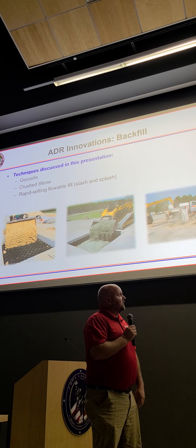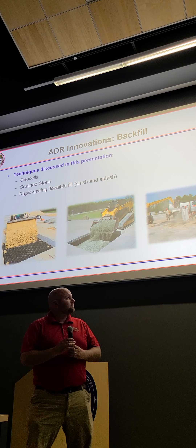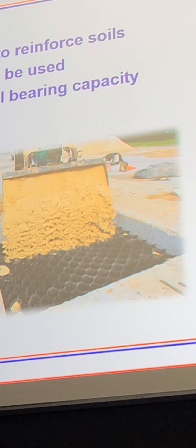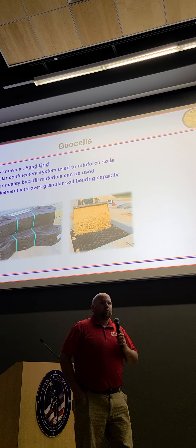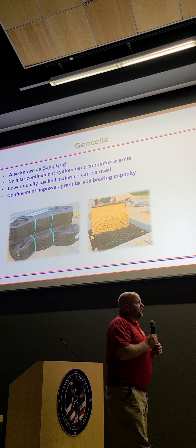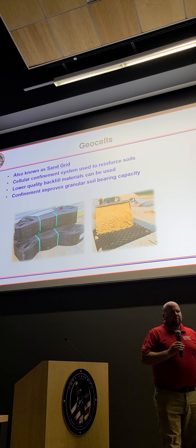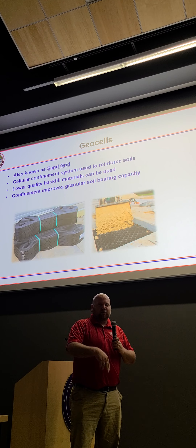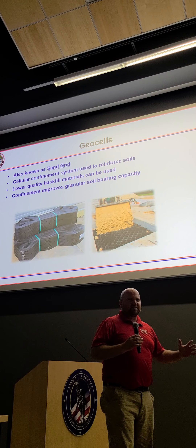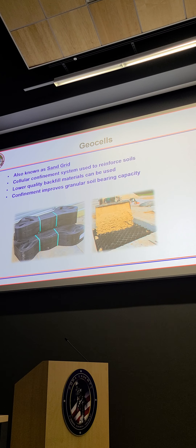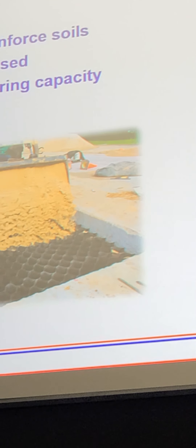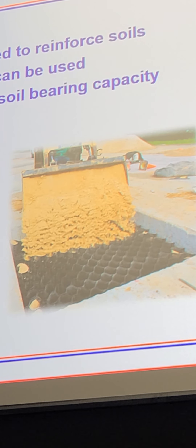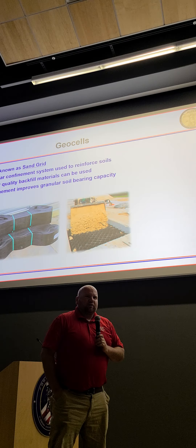In this brief we'll start out by talking through geocells. Geocells, also known as sand grid, are a cellular confinement system used to reinforce soils. Basically it allows you to take a low-quality backfill and make it a little bit better. That confinement improves the bearing capacity of the granular soil — kind of like when you put an umbrella in sand at the beach. The further down you go, the more stable it is because of the confinement. That's what gives sand grid its improved strength.